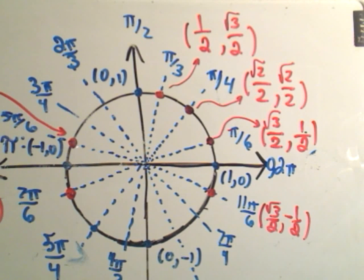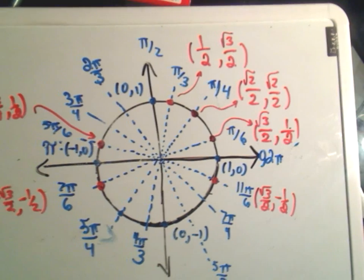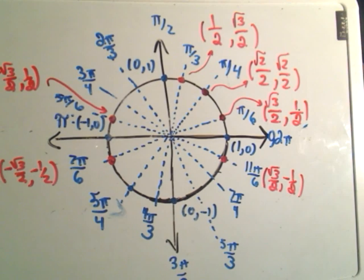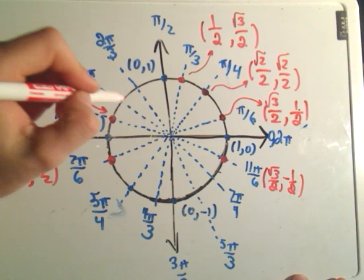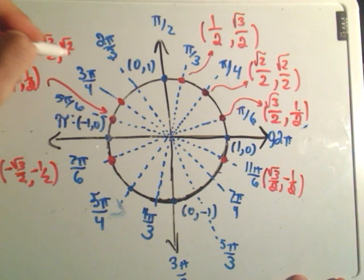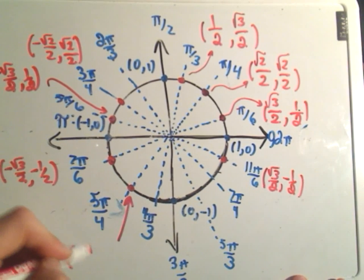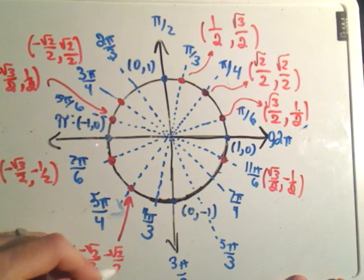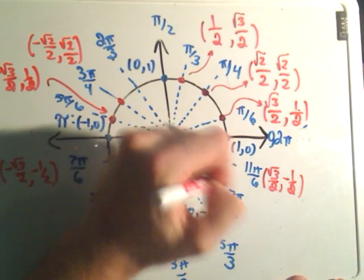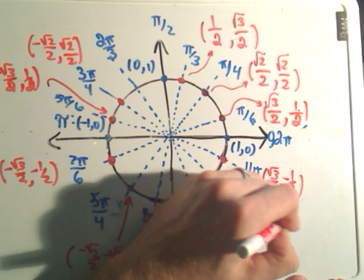The value for π/4 is (√2/2, √2/2). At 3π/4 by symmetry only the x-coordinate is negative: (-√2/2, √2/2). Down in the bottom left both are negative: (-√2/2, -√2/2). In the bottom right quadrant the x-coordinate is positive but the y-coordinate is negative: (√2/2, -√2/2).